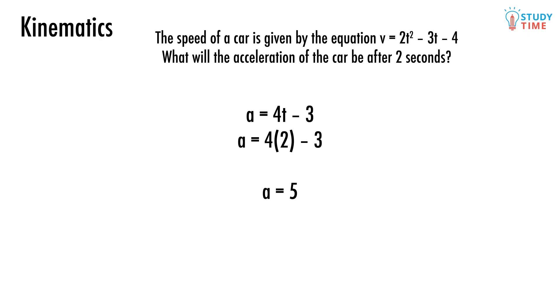A equals 4t minus 3. Great. Now that we know this, all we need to do is replace the t with a 2, and we can answer the question. A equals 4 times 2 minus 3 equals 5. And so after 2 seconds, the car will be accelerating at 5 meters per second per second.